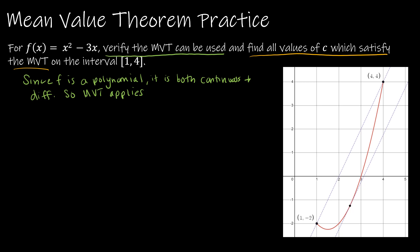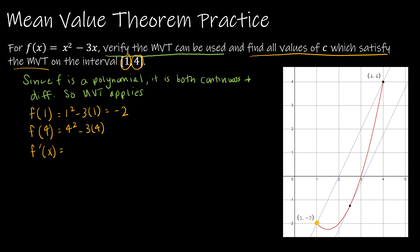Now I want to find the values of c which satisfy the MVT on the interval 1 to 4. I need to find f(1), f(a), f(b) which is f(4), and f'(x). f(1) means plug 1 into the function: 1 squared minus 3 times 1, which is negative 2. f(4) is 4 squared, or 16, minus 3 times 4, so 16 minus 12, which is 4. So we have the point (1, −2) and the point (4, 4). And f'(x) is just the derivative of this function, which is 2x minus 3.